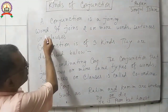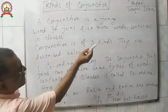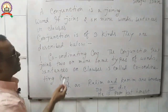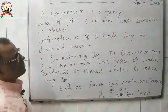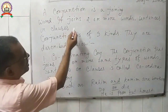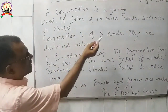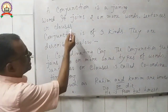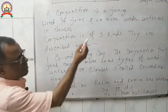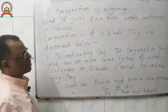A conjunction is a joining word. It joins two or more words, sentences, or clauses. In Bengali, conjunction is called 'shang jukkadi shabda' — it joins two or more words, sentences, or clauses.